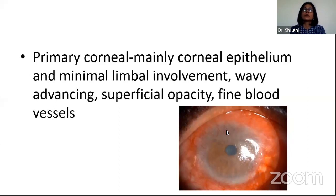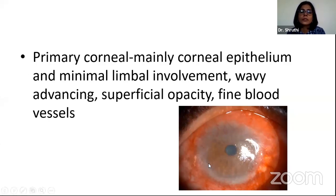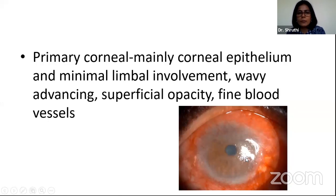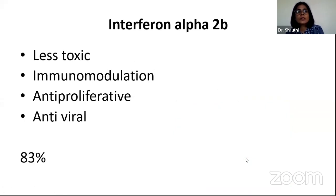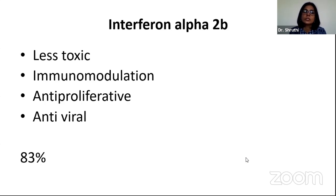Primary corneal involvement OSSN mainly shows corneal epithelium involvement, with possible but no gross limbal involvement. You can see a wavy pattern with fine blood vessels. Alpha interferon becomes useful in these patients as it is less toxic. It acts by immunomodulation, antiproliferative, and antiviral activity, with a reported success rate of about 83%.